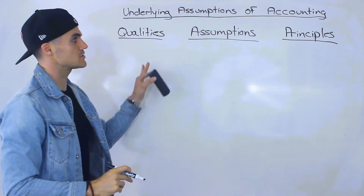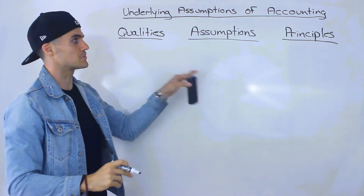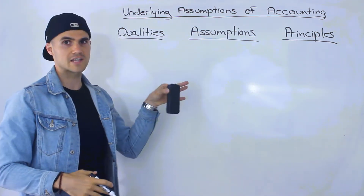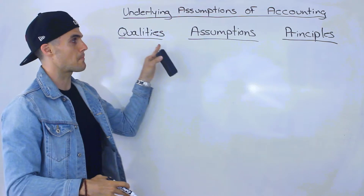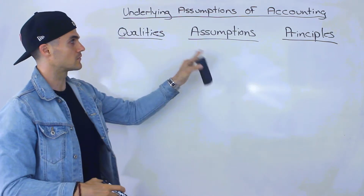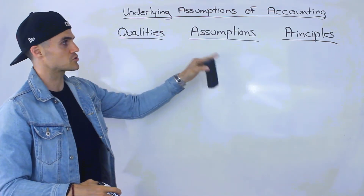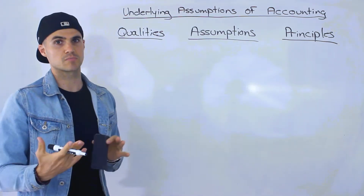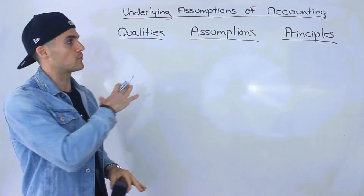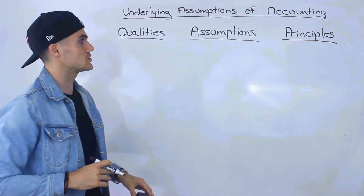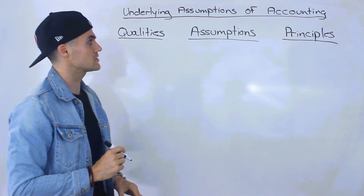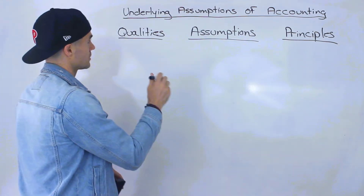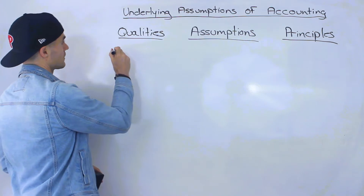A lot of times students get confused between these three things. Many textbooks mention qualities, assumptions, and principles, but they don't really explain the differences between them or how they relate to each other. So I want to start off by differentiating between these three things.